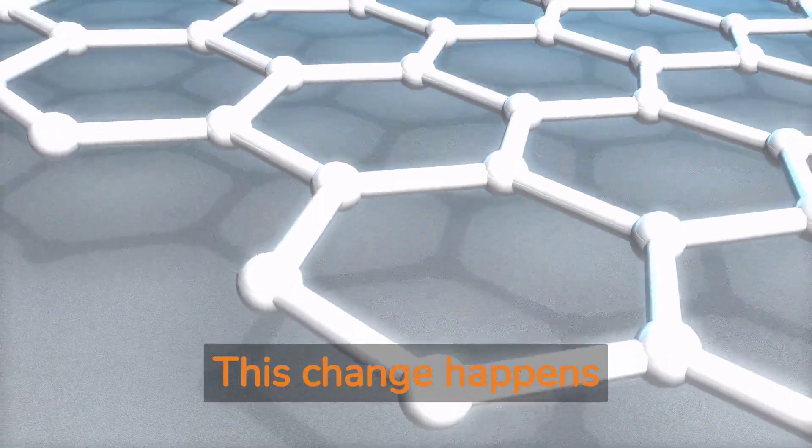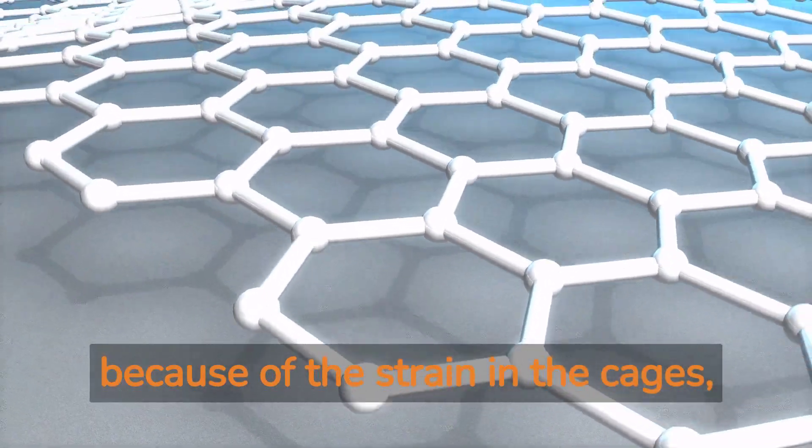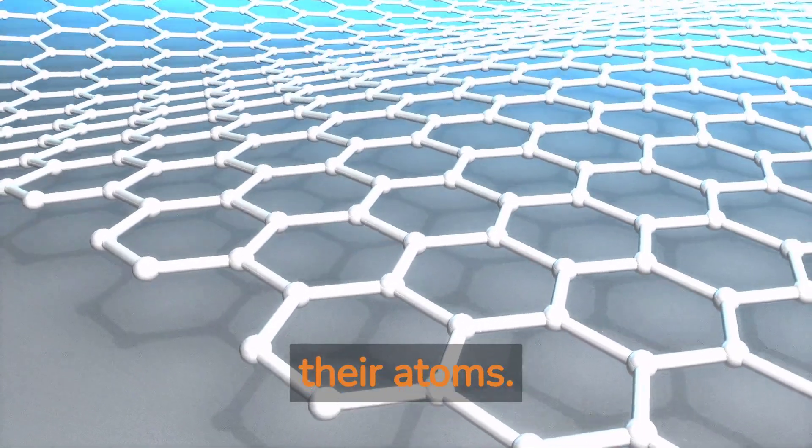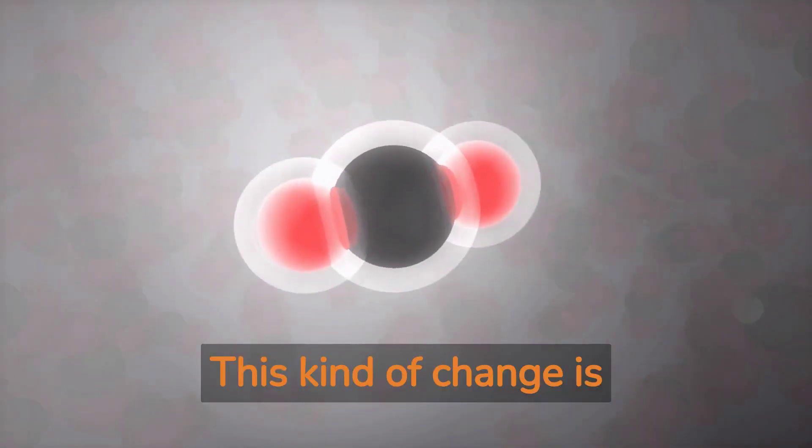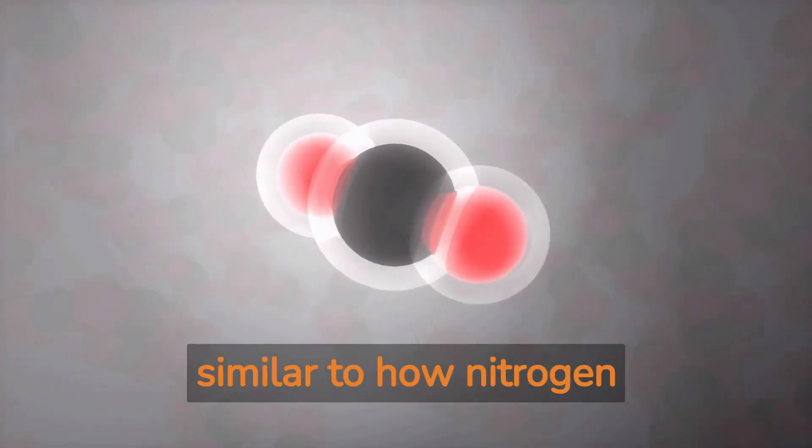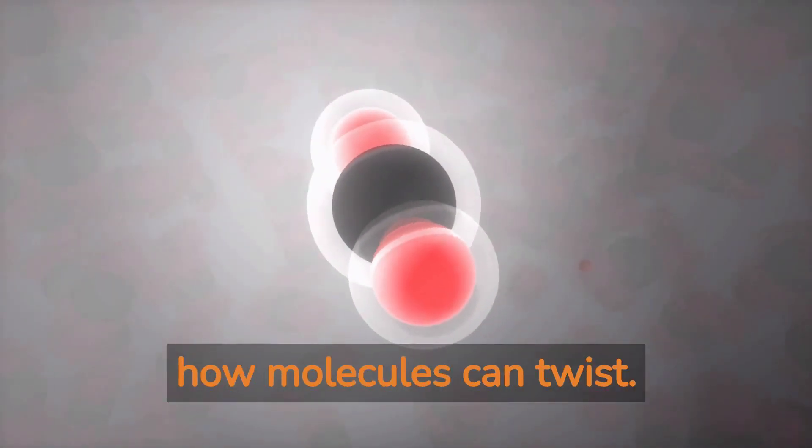This change happens because of the strain in the cages, which helps them rearrange their atoms. This kind of change is similar to how nitrogen atoms can change their shape or how molecules can twist.